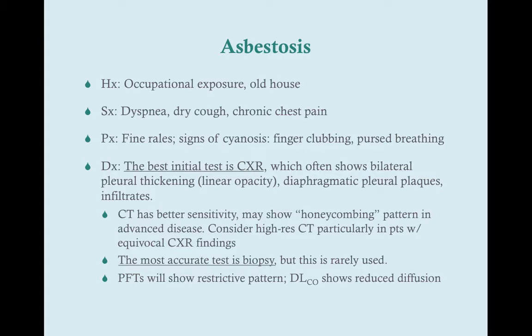Asbestosis is primarily a clinical diagnosis, but we do need imaging — the chest X-ray is the best initial test. It's your history that will really narrow down your patients, and the chest X-ray will give you a good idea whether the patient has asbestosis. On chest X-ray, we see bilateral pleural thickening appearing as a linear opacity, diaphragmatic pleural plaques — which are very unique to asbestosis — and infiltrates.